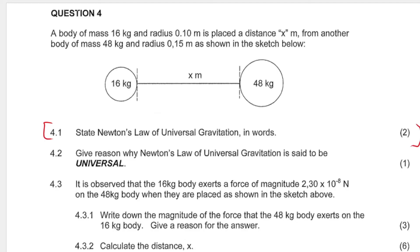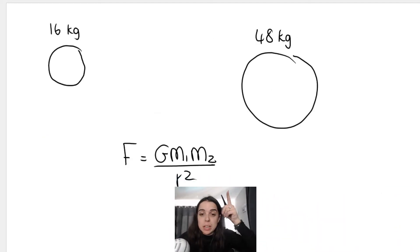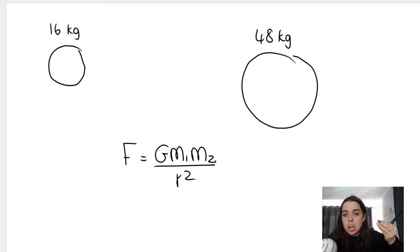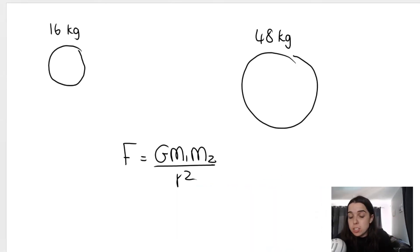Now with that being said, I hope you know that when we apply this formula to the above situation, obviously G is a constant, it's the universal gravitational constant. We get it off the formula sheets. M one would be 16 kilograms, M two would be 48 kilograms. We know the force it's given over here, 2.3 times 10 to the negative eight.